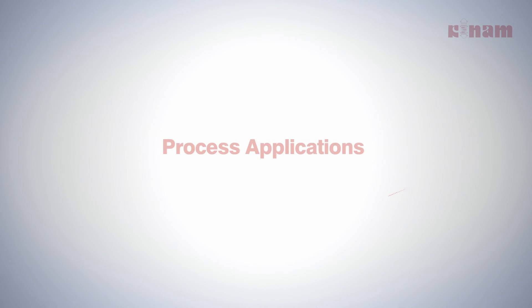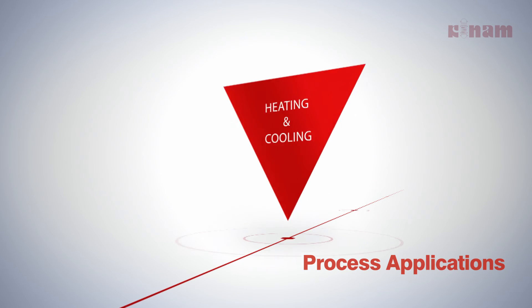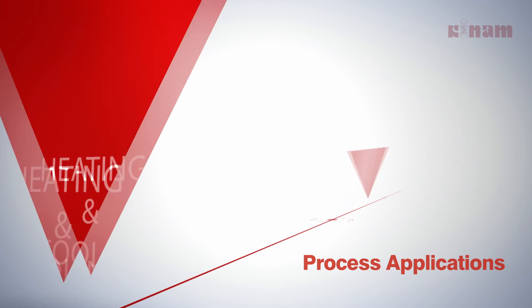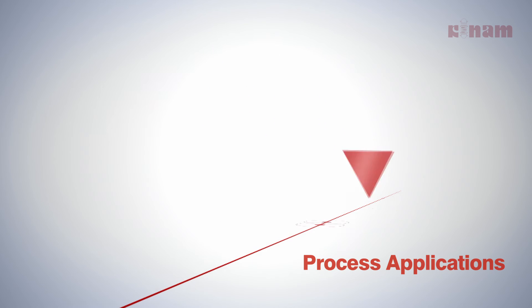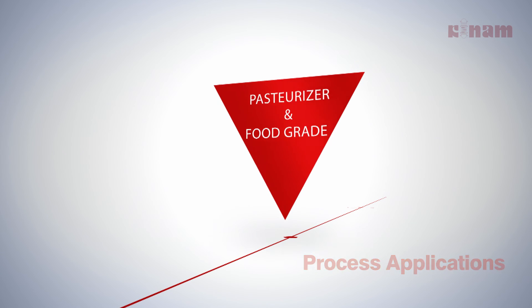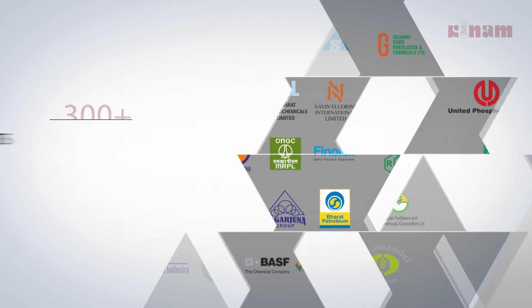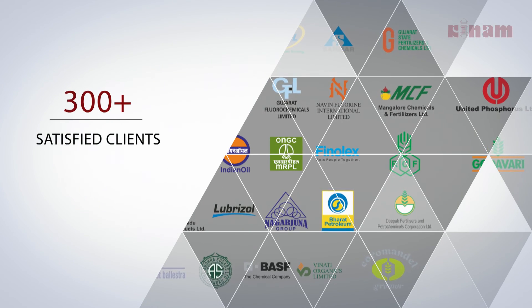The process applications of corrugated tubes include heating and cooling, heat recovery, condensation, evaporation, reboiler, pasteurizer and food-grade application. Over 300 satisfied clients.